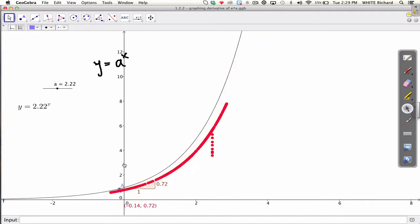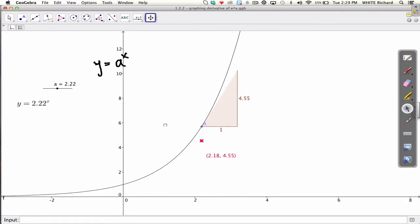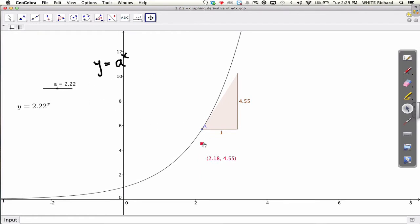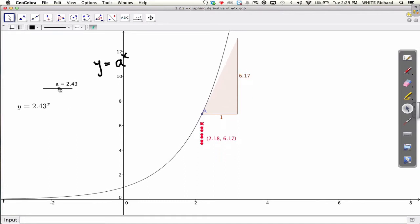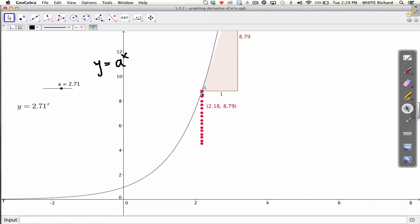But what I want to know is, is there a function that the derivative is the same as the original function? And really what I need to do is drag this slider up until the red point is on the blue point. So let's do that. Let's just drag that up until 2.71, that looks about right.